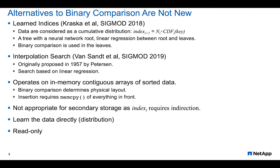The idea with learned indices is that they treat the data set as a cumulative distribution function and compute the location of a key by multiplying its probability by the cardinality of the set, giving a rough idea of where the datum can be found. In that work they had a neural network at the root of the tree and then used linear regression between the root and the leaves. Another idea dating back to 1957 is interpolation search, which basically uses linear regression to guess where the key is found in the data set.